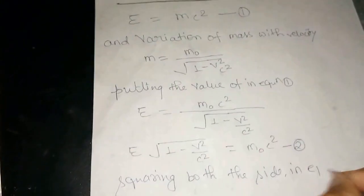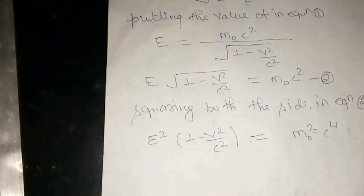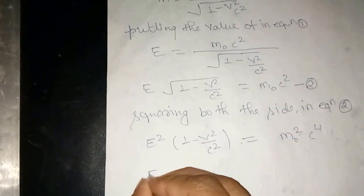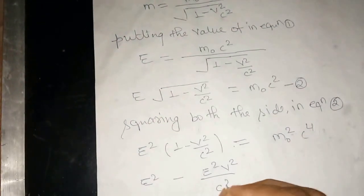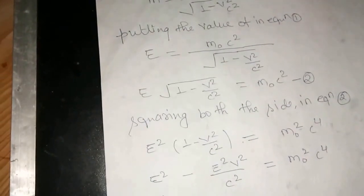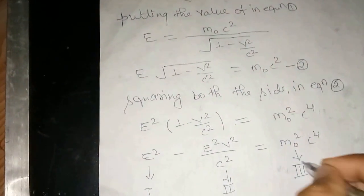Squaring both sides of equation 2: E square times 1 minus v square by c square equal to m-naught square c to the power 4. Solving this: E square minus E square v square by c square equal to m-naught square c to the power 4. Now identifying the first, second, and third terms.